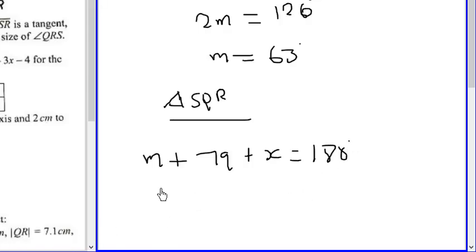Now we know our M to be 63, plus 79 plus X is equal to 180 degrees.